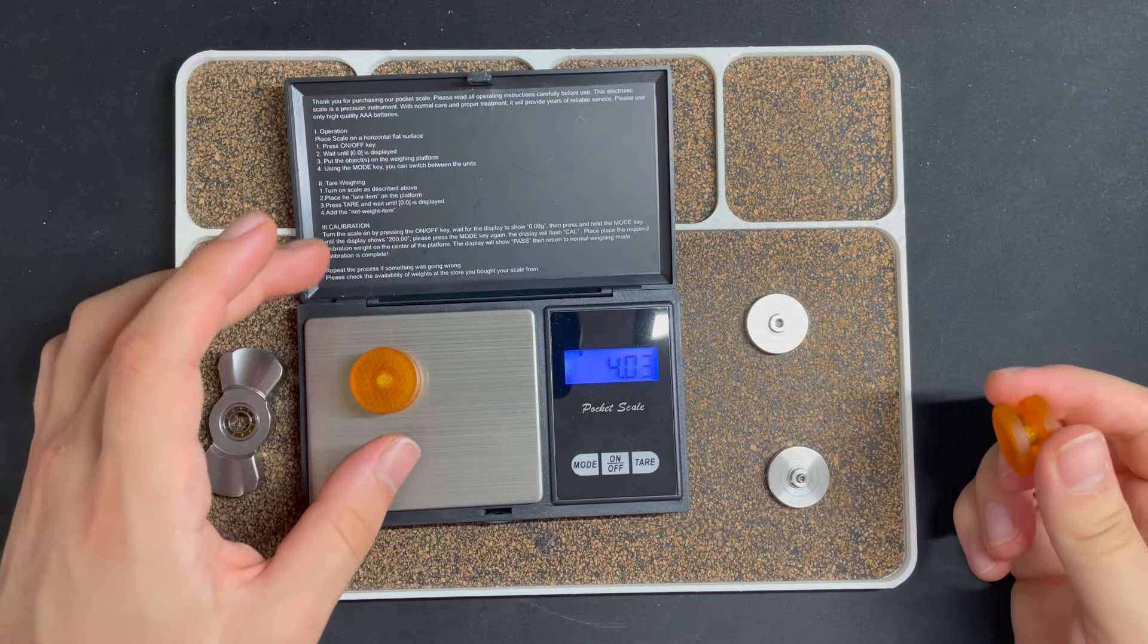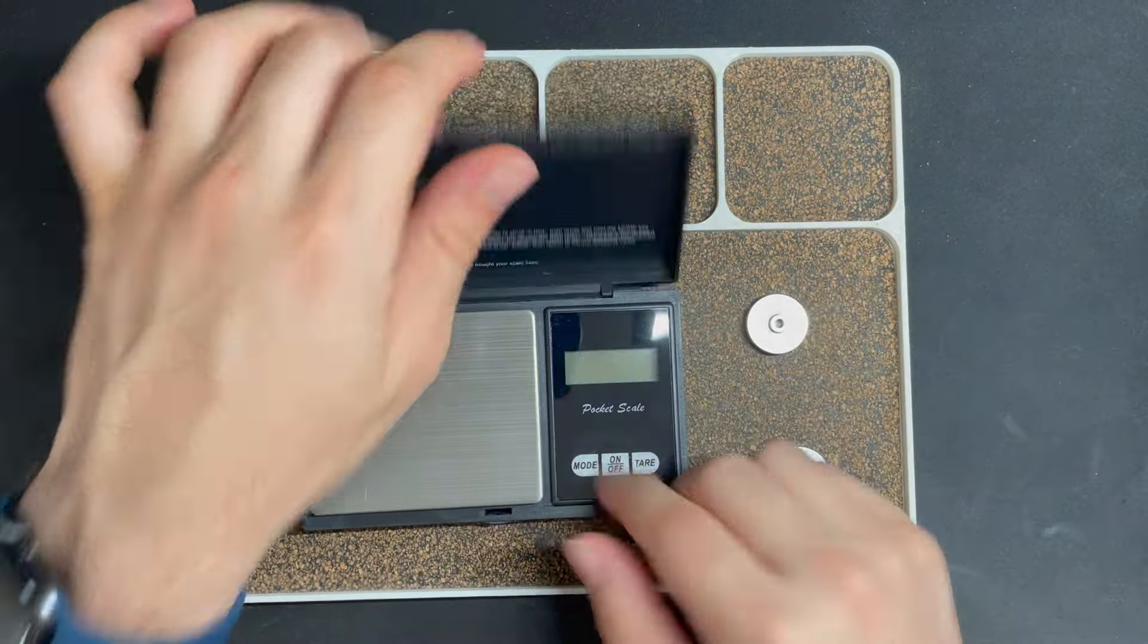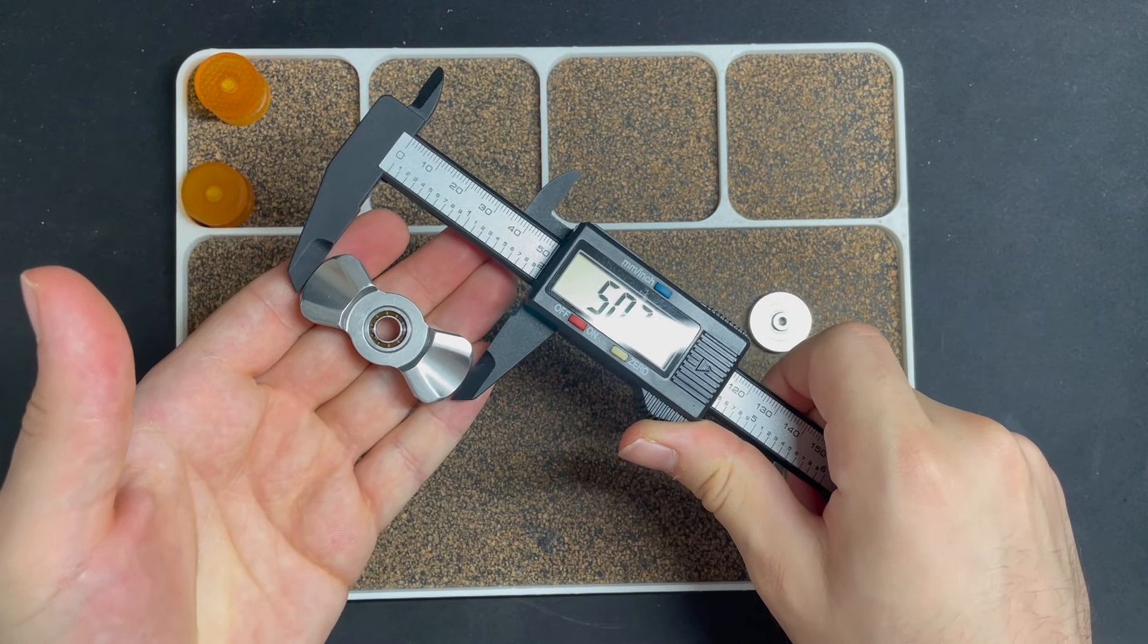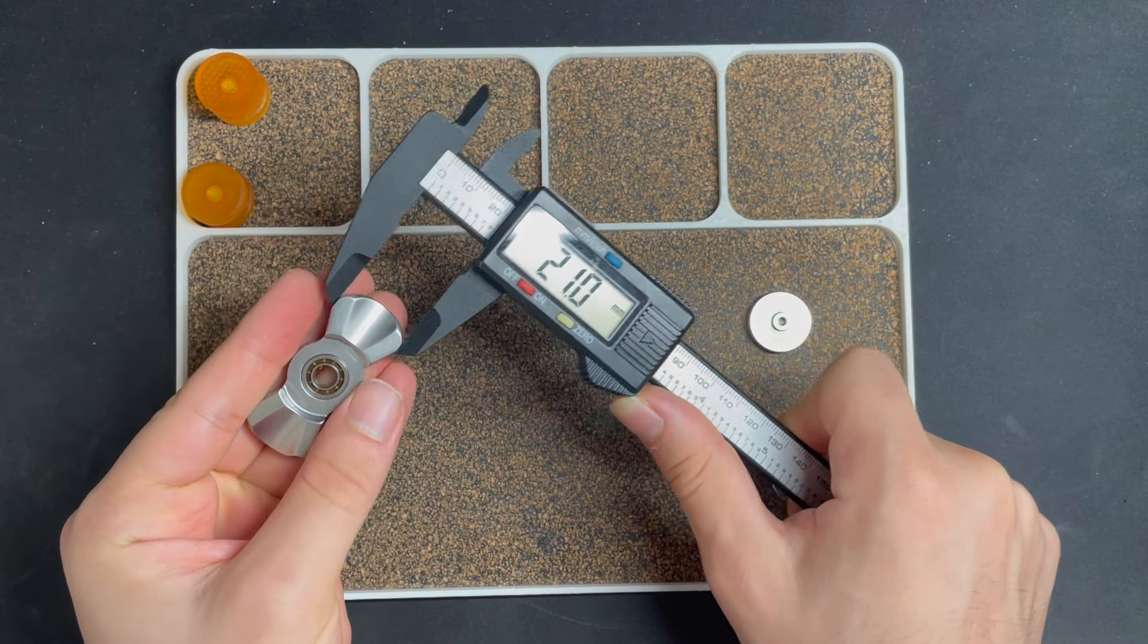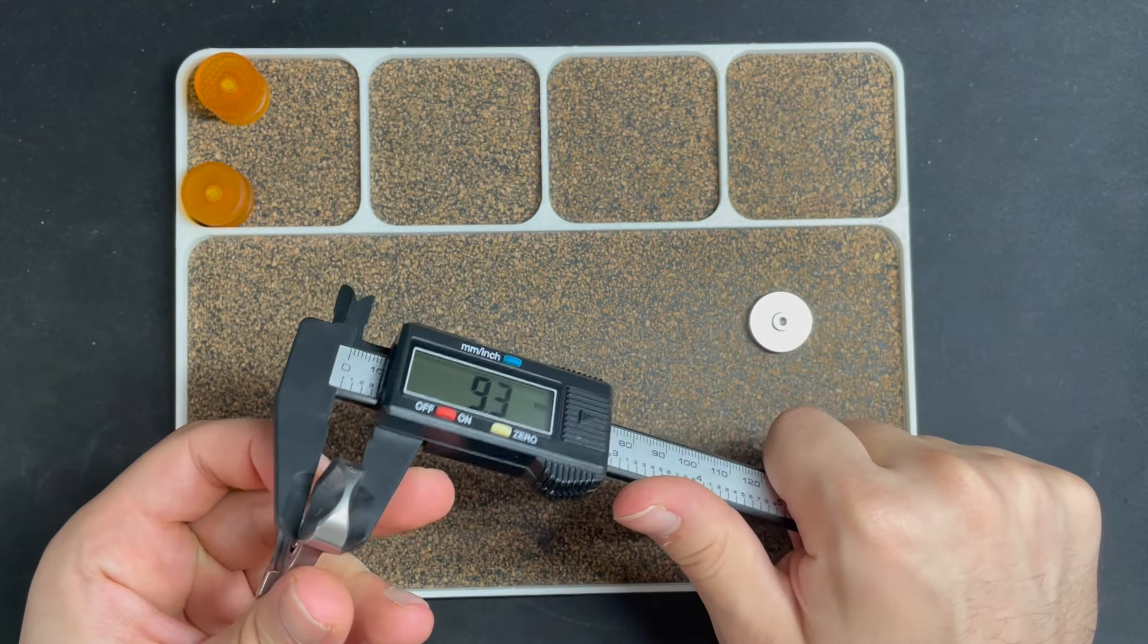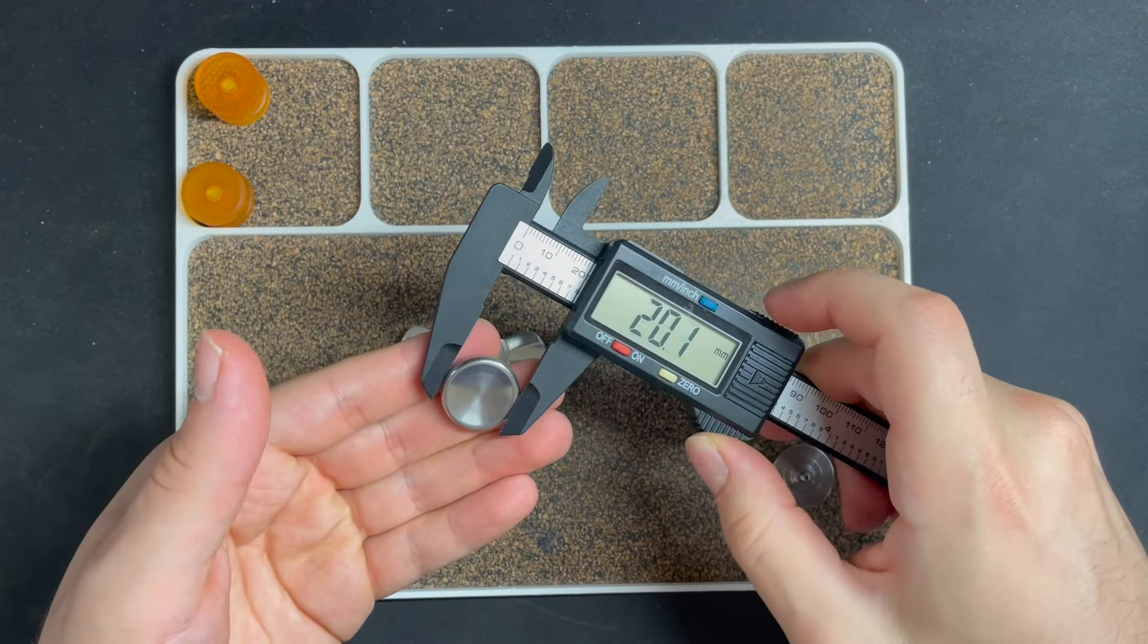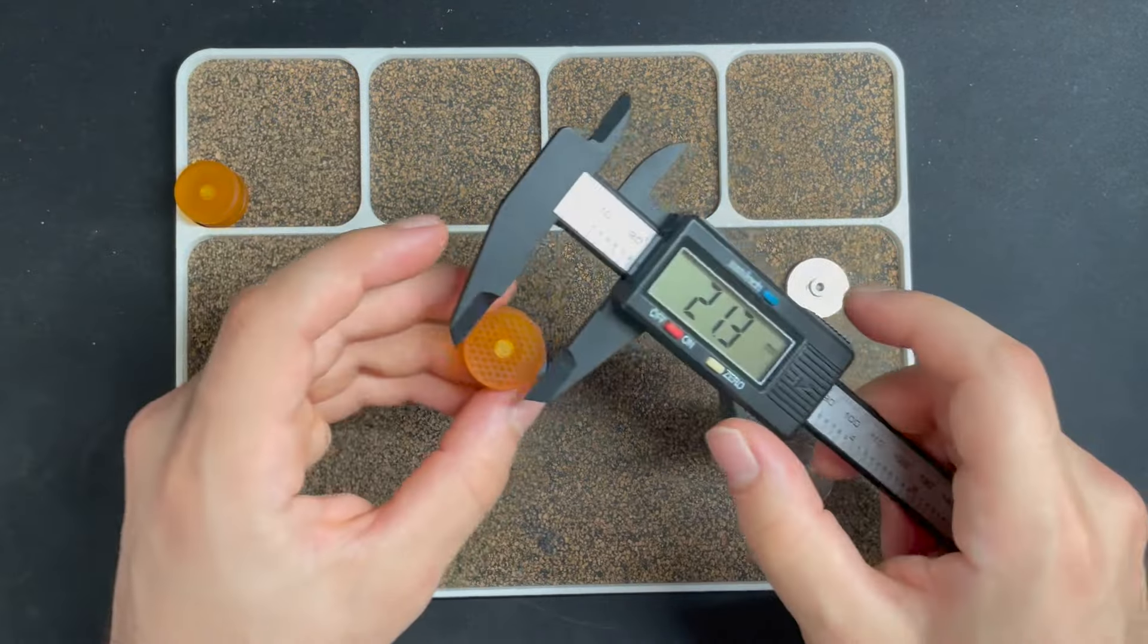These resin buttons are four grams and four grams. The body is 50 millimeters long, it is 21 millimeters wide, and the height of this thing is at the highest point 5.3. The button diameter is 21, and these are 20s. This is 21, I believe.